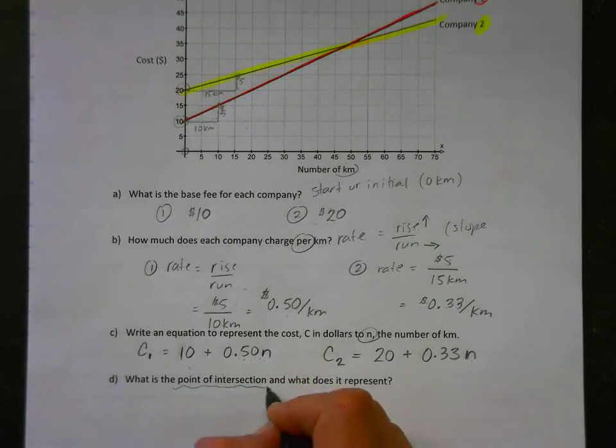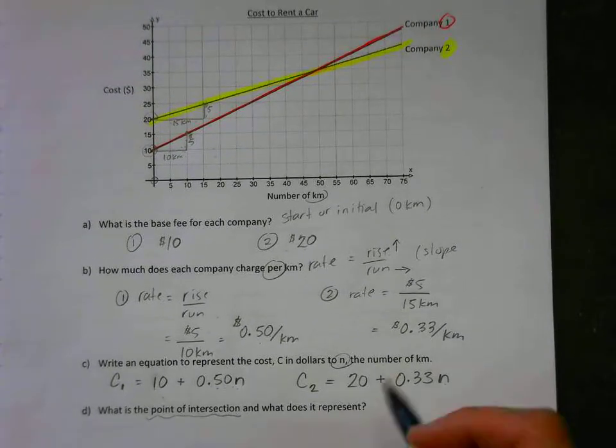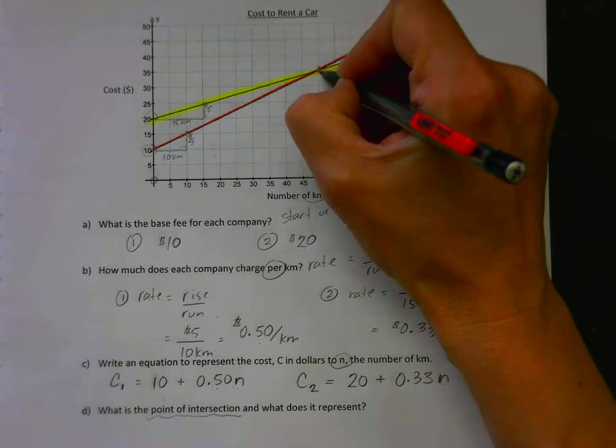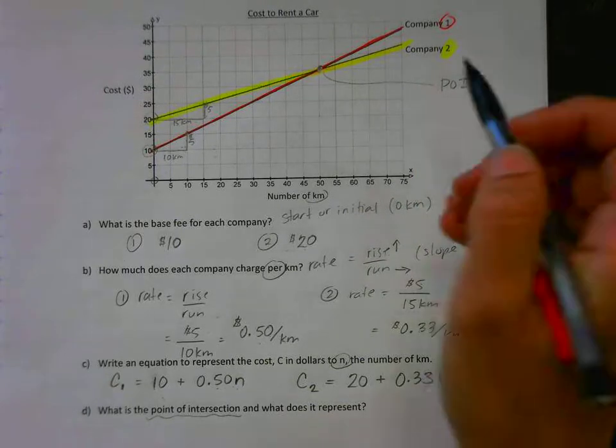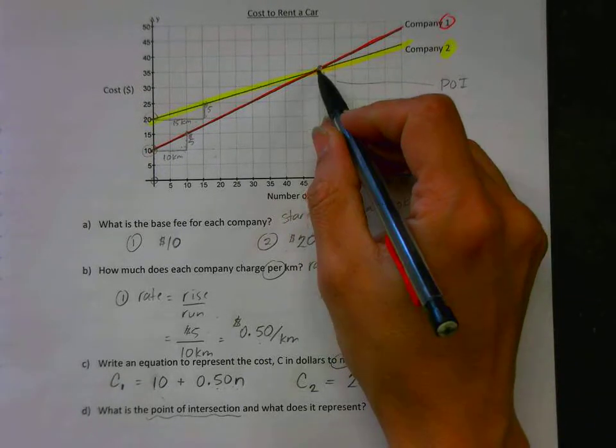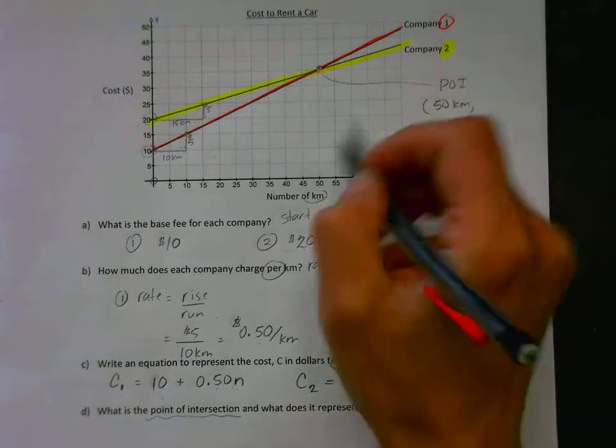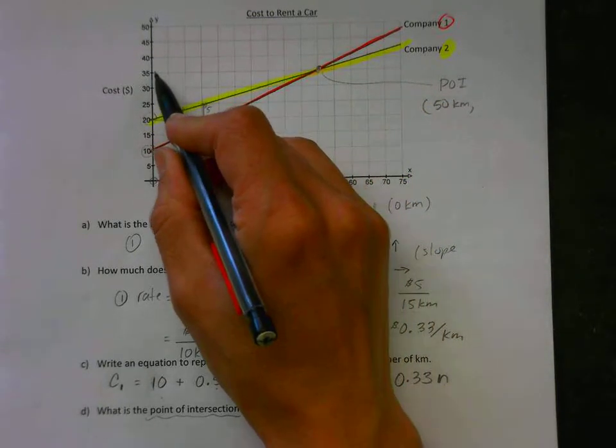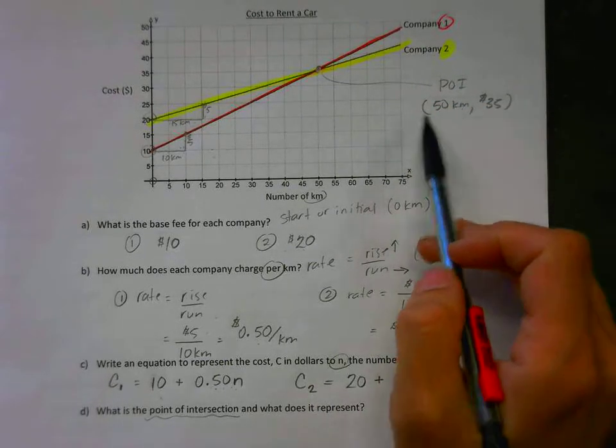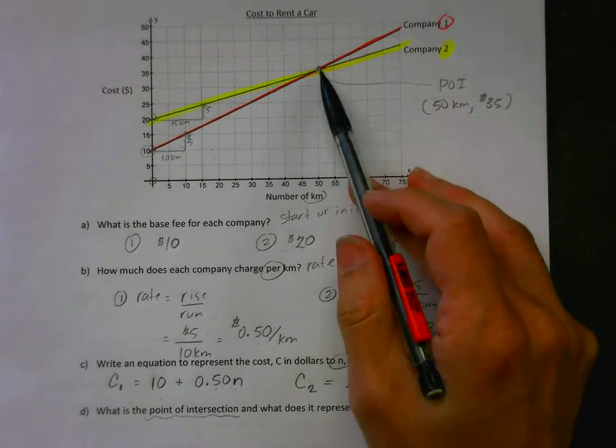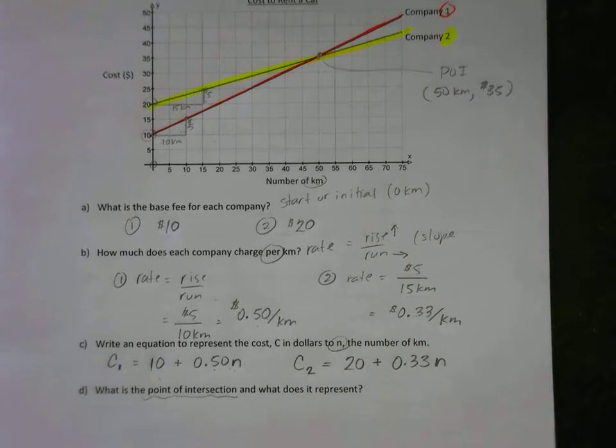What is the point of intersection and what does it represent? Well, first of all, let's go find the point of intersection. The point of intersection happens to be right here where these two lines intersect or cross. That's our point of intersection, and it has two parts: it has an X and a Y. So I'm going to come down here, and the X happens to be fifty, and I'm going to actually put in the units. It's actually fifty kilometers, and the Y, you have to come over and follow it over, that's thirty-five dollars. So what does that mean? That means that when you travel fifty kilometers, both companies will cost thirty-five dollars. So it's the point at which the cost and the distance happen to be the same for both companies.